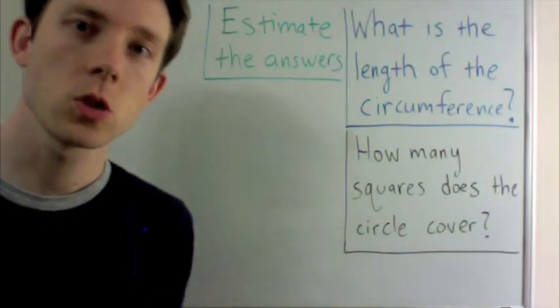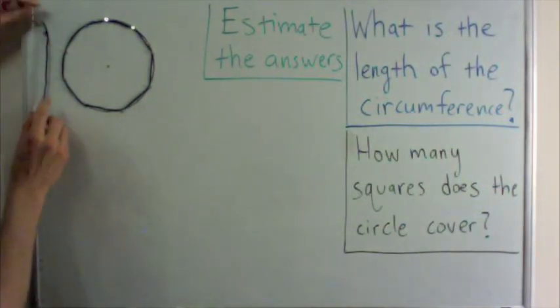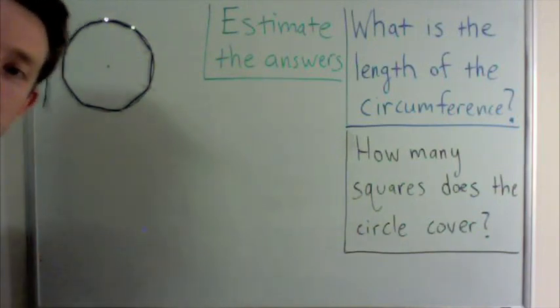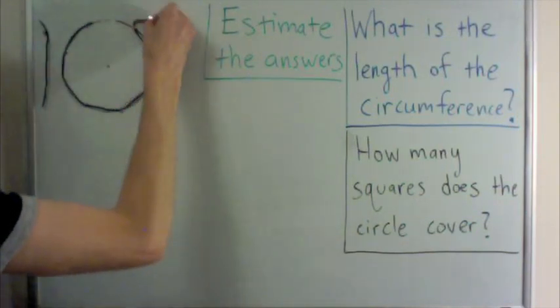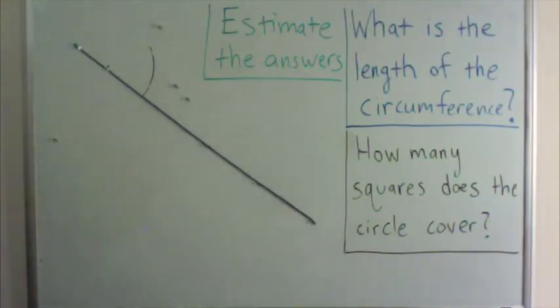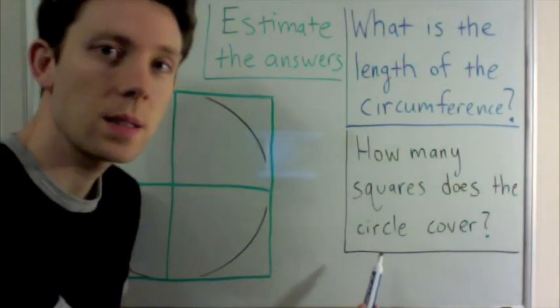Let's use some string to try to estimate the answer to the first problem. This string is about the diameter of this circle, and the other piece of string is the length of the circumference. If I unravel the circumference string and measure it against the diameter string, I see that it's a little more than three times as long. If this were a running track with a diameter of one mile, the track would be a little more than three miles around.